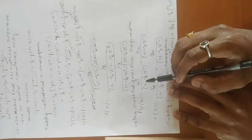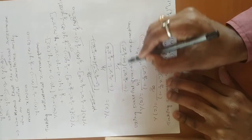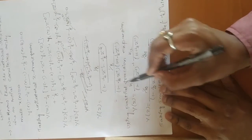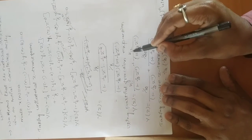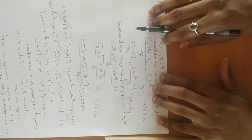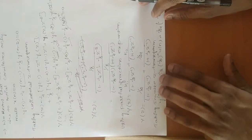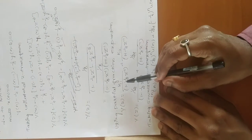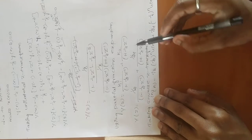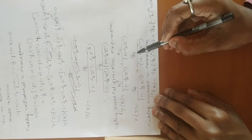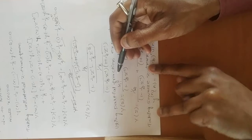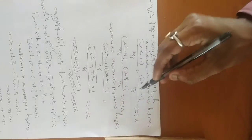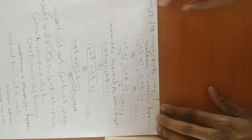Now apply partial fraction expansion: Y(z) = K₁/(1 - (1/2)z⁻¹) + K₂/(1 + (1/4)z⁻¹). Following the partial fraction expansion method from previous classes, you get K₁ = 1/12 and K₂ = 1/24.